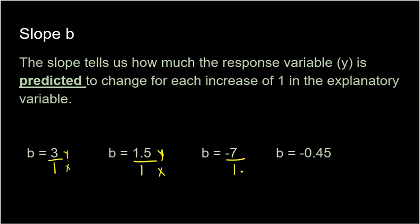What if your slope is negative? Same thing — put it over 1. The 1 is always the x, and the slope value is always y on top. We would say: I predict the y value to decrease by 7 units for each increase of 1 in the explanatory variable. Even a negative decimal like -0.45 means the predicted response variable will decrease by 0.45 units for each additional 1 in the explanatory variable.